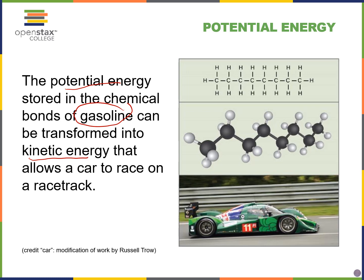Our book also gives the example of potential energy stored in the chemical bonds of gasoline — octane — which can be transformed into the kinetic energy that allows a car to race on a racetrack. As we break the chemical bonds, energy is released to power the movement of the car.